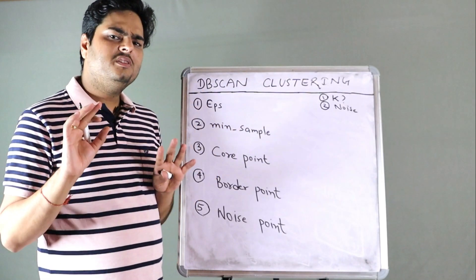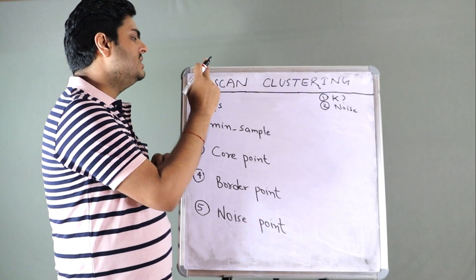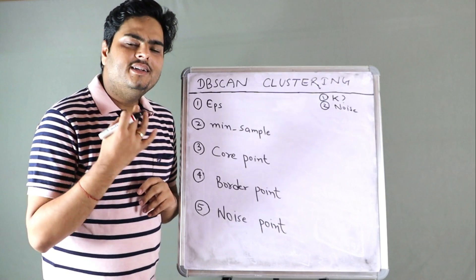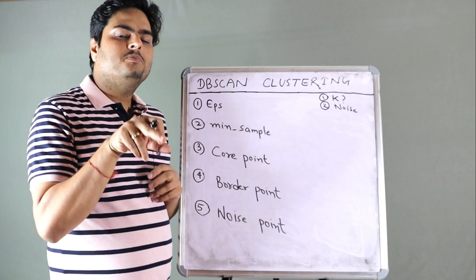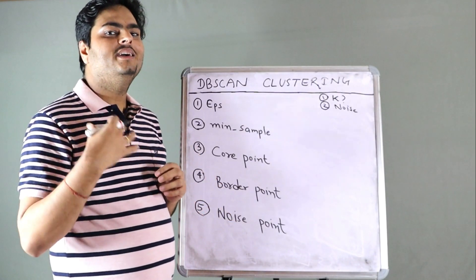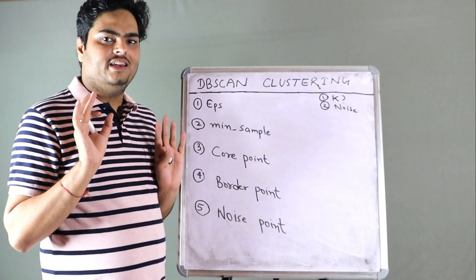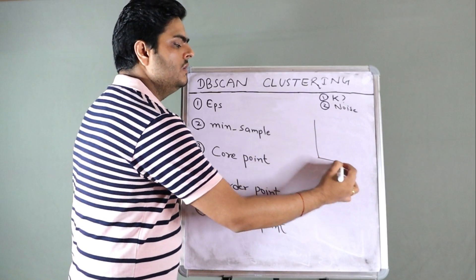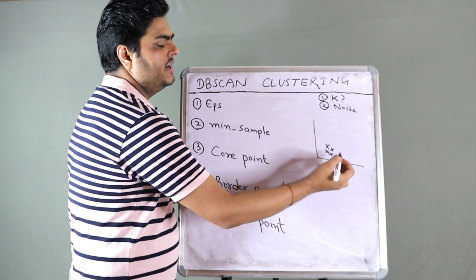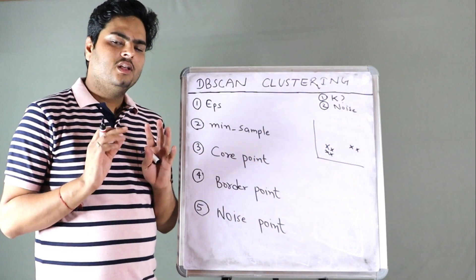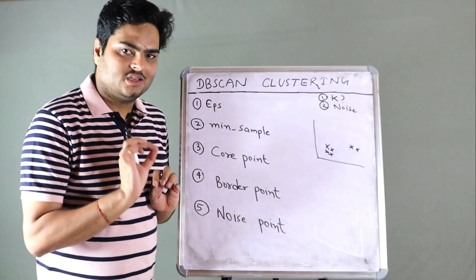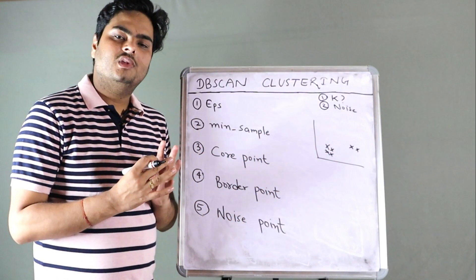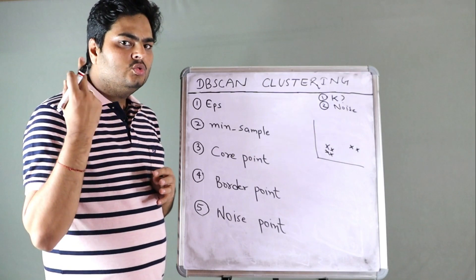DBSCAN stands for Density-Based Spatial Clustering of Applications with Noise. It is a density-based clustering algorithm. Density is nothing but how many data points are present in a given area. If there are more data points we call it a more dense area; if fewer data points, a less dense area. When we talk of density, we are talking about the closeness of points on an XY plane.